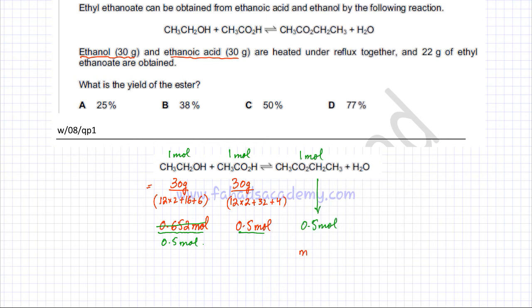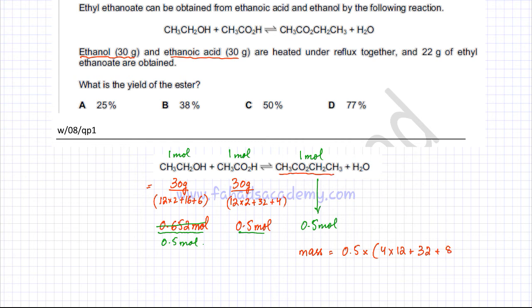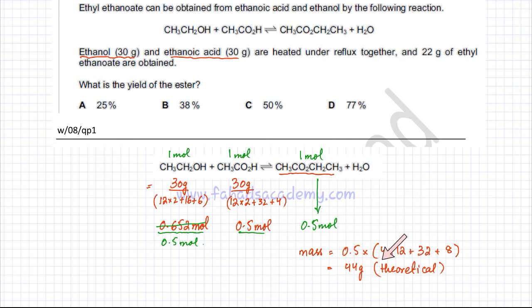The theoretical mass of the ester = moles × molar mass = 0.5 × 88. The ester has 4 carbons (4 × 12 = 48), 2 oxygens (32), and 8 hydrogens (8), giving a molar mass of 88. So 88 × 0.5 = 44 grams theoretically. However, the question states only 22 grams of ester are actually produced — this is the experimental value.